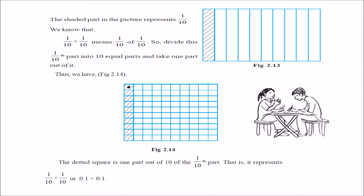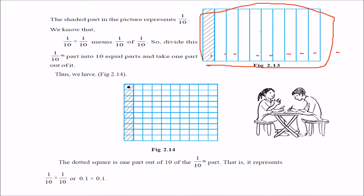So, 1 by 10 into 1 by 10 — think of it as one area divided into 10 parts. Then again you divide. This is 1 by 10. You are dividing the 1/10th part again into 1/10th. So 1/10th of 1/10th is this single part. This is how you get 1/10th of the 1/10th part.